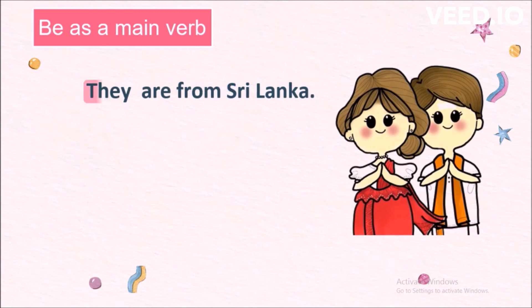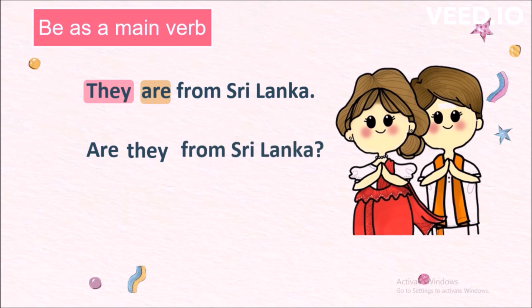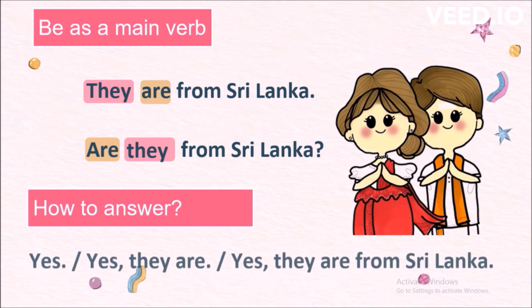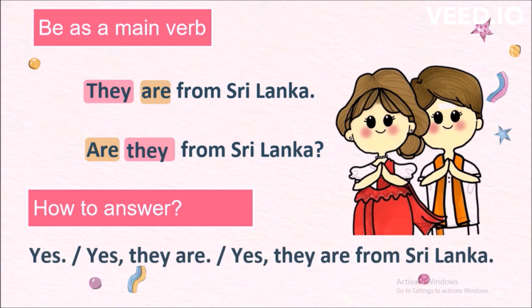In 'They are from Sri Lanka,' they is the subject and are is the main verb. To form the question, we change the word order: Are they from Sri Lanka? First the main verb, then the subject, and the rest of the sentence. How to answer: we can either say yes, or yes they are, or yes they are from Sri Lanka.